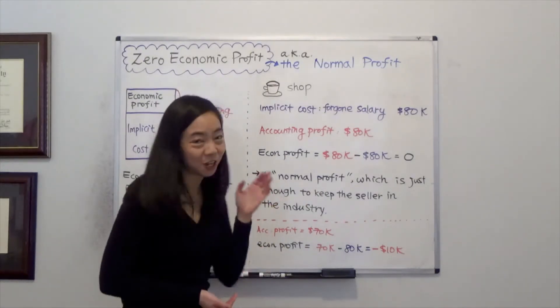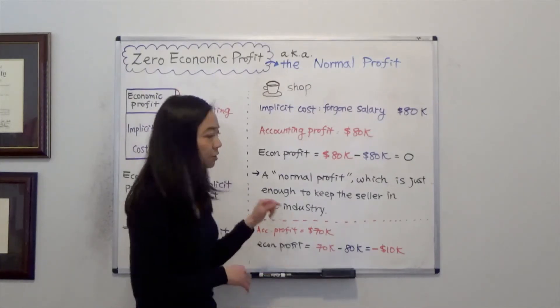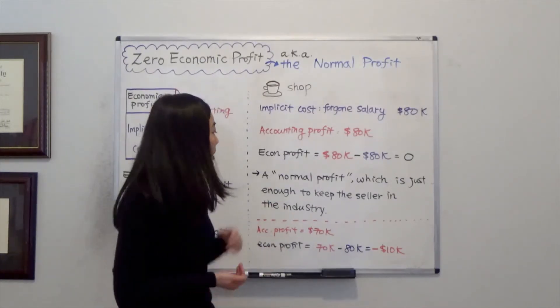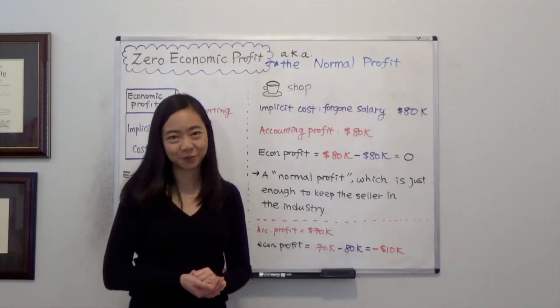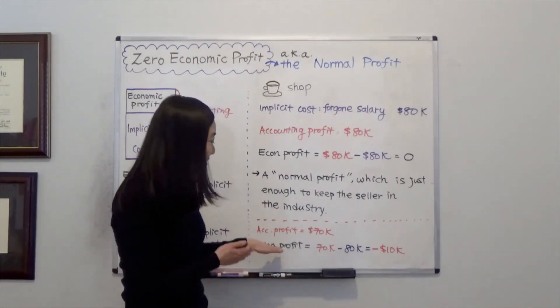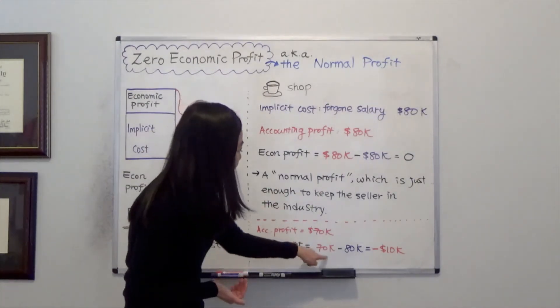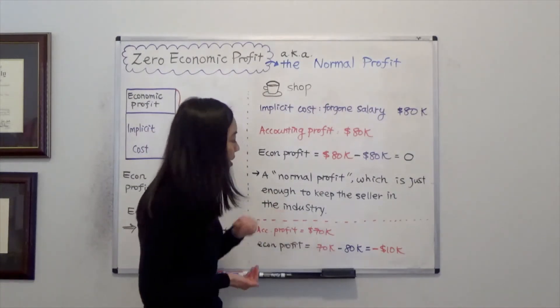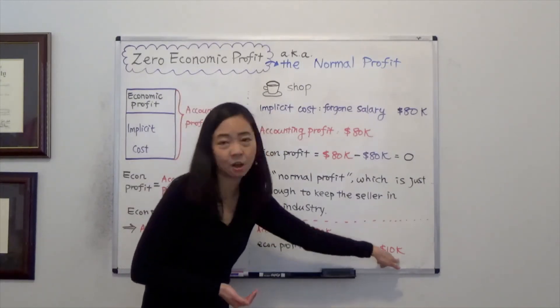Suppose I am changing the scenario. Suppose in the first year, your accounting profit from the coffee shop was not eighty thousand dollars. It was only seventy thousand dollars. Now you will have a negative economic profit, which is economic loss, because seventy thousand accounting profit minus your foregone salary, eighty thousand, that is negative ten thousand.